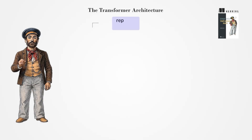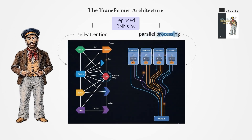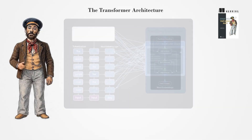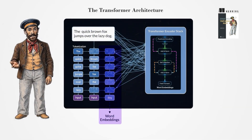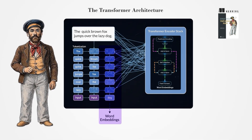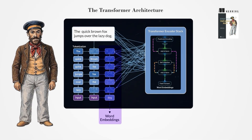Transformers replaced recurrent neural networks by introducing self-attention and parallel processing, which led to faster training times. They used word embeddings to understand context and have been adapted for tasks beyond text, although this discussion focuses on their use in generative models for unstructured text.